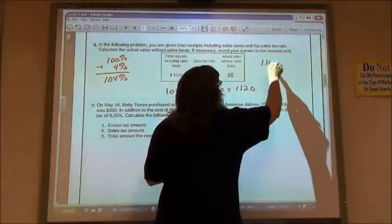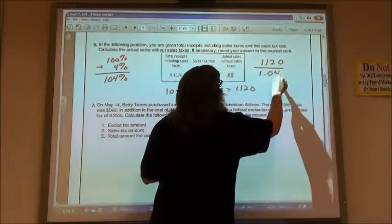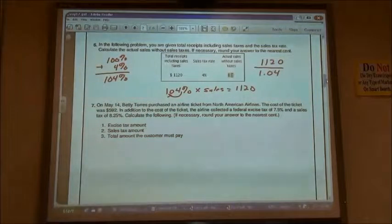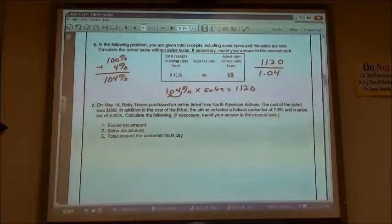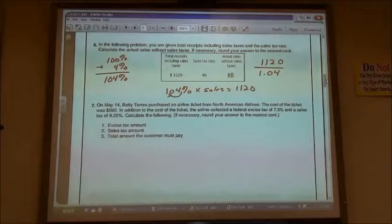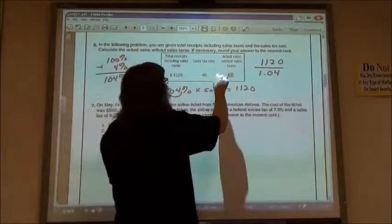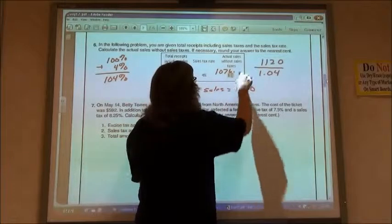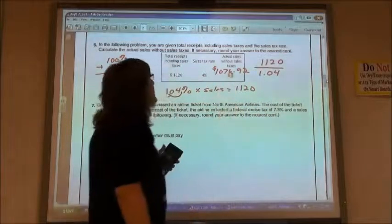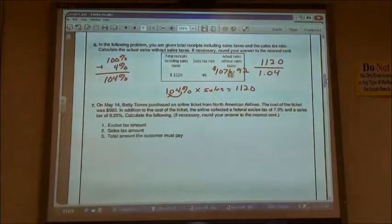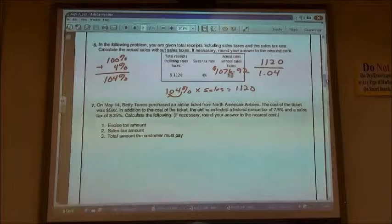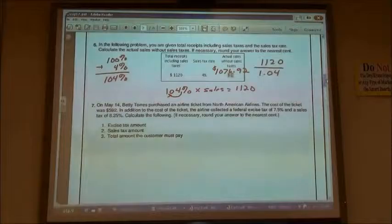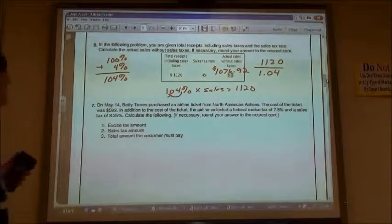So we take $1,120 divided by 1.04, moving my decimal back two places to change it to a decimal instead of a percent. So $1,120 divided by 1.04 gives me $1,076.92.